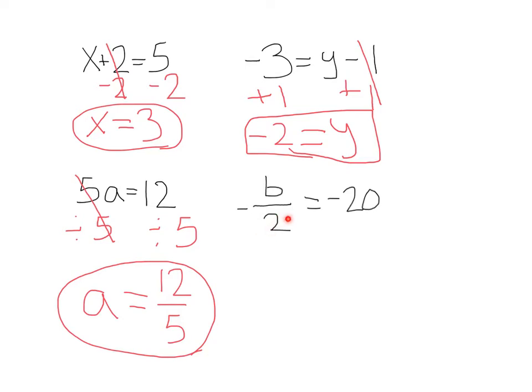Here we have negative b divided by 2. Remember, this fraction is also like division. So negative b divided by 2 equals negative 20.